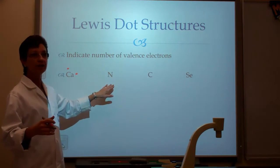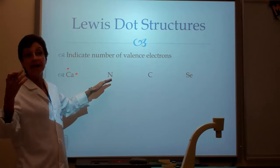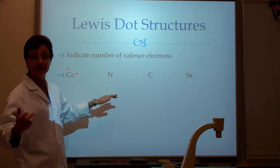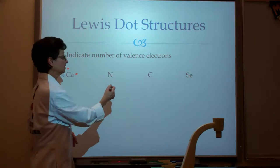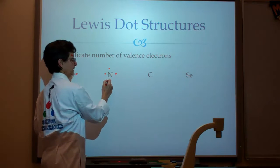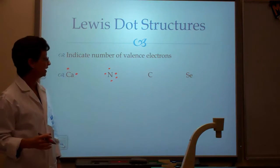So nitrogen, we know that nitrogen is in the nitrogen family, and it has a minus three charge that it could have, but we know that it has five valence electrons. Therefore, the Lewis dot for nitrogen will be one, two, three, four, and five. So there, the Lewis dot for nitrogen is completed.